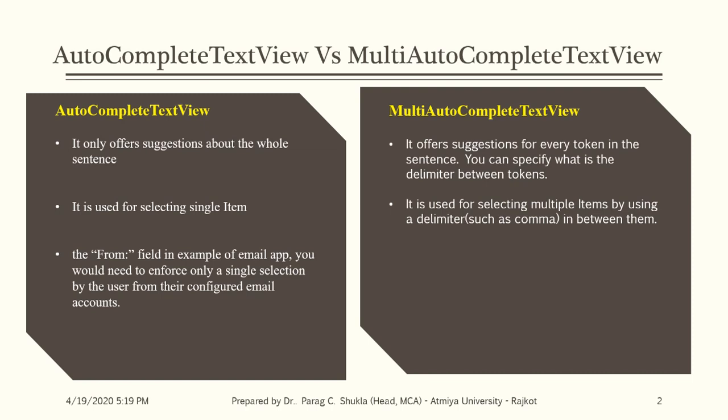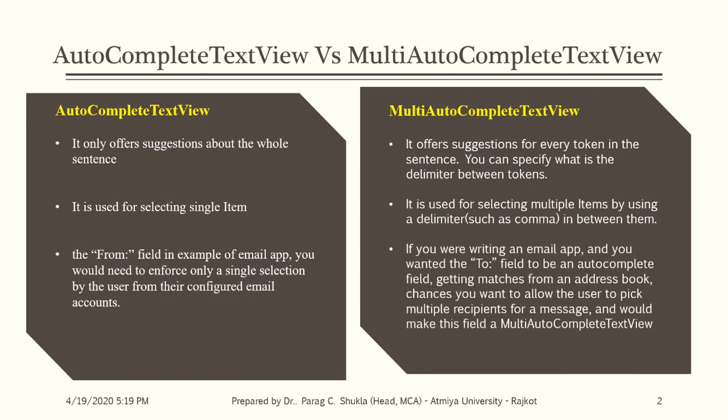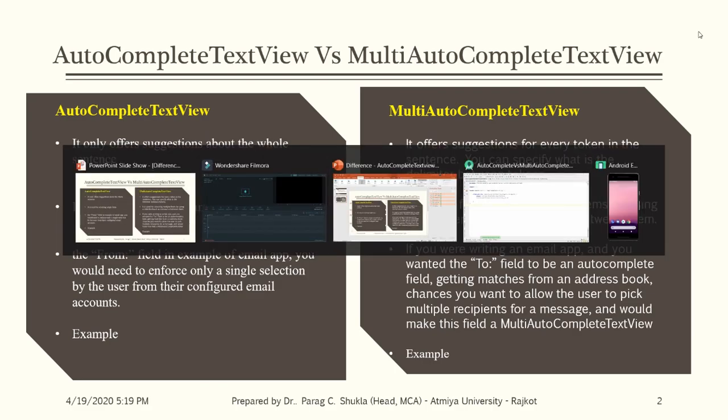Let me take the example of an email application. In the From field of an email app, it enforces only a single selection by the user — that concept is known as AutoCompleteTextView. But in MultiAutoCompleteTextView, continuing the email app example, if you were writing an email app and you wanted to allow the user to pick multiple recipients for the message, at that time we can use MultiAutoCompleteTextView.